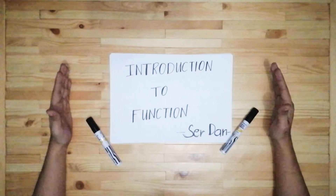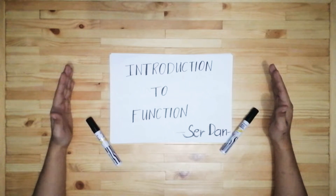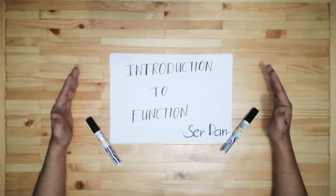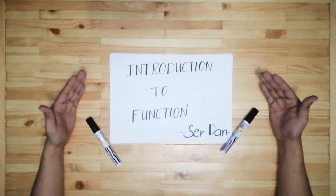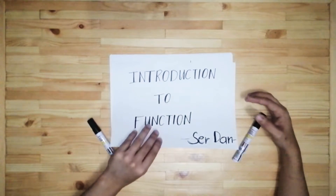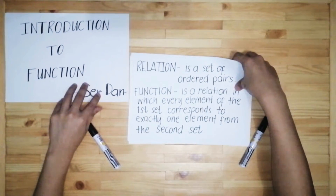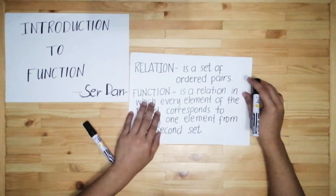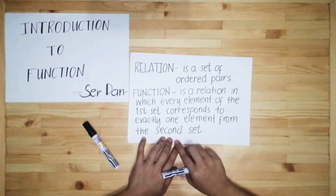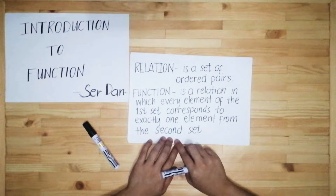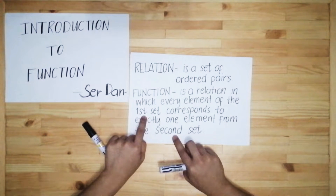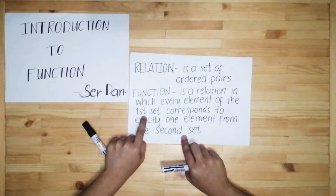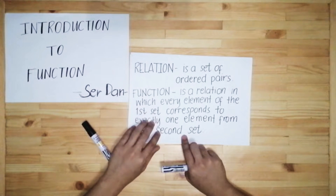Hi everyone, welcome back to my channel. For today's video I'll be discussing introduction to function. To start, let's have the definition of relation and function. A relation is a set of ordered pairs. A function is a relation in which every element of the first set corresponds to exactly one element from the second set. The first set is what we call the domain, and the second set is the range.